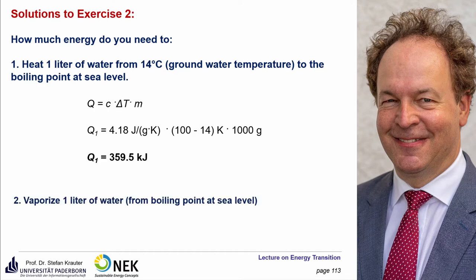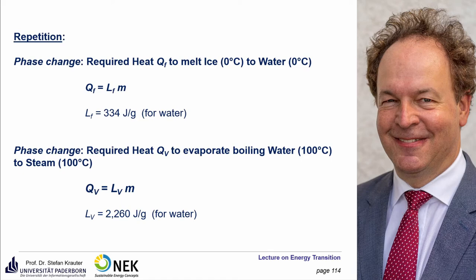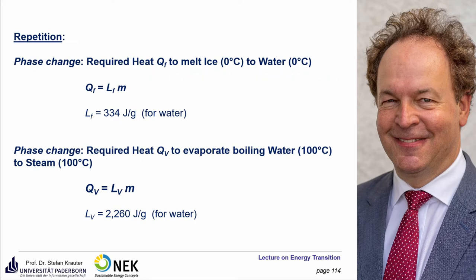The next question is: how much energy to vaporize one liter of water from boiling point at sea level? This formula doesn't apply because at the evaporation point there is no rise in temperature — it's a phase change. The heat energy required to melt ice and go into water keeps the temperature the same, but you still need energy. This energy is Q equals LF times M, and the constant LF is 334 joule per gram for water.